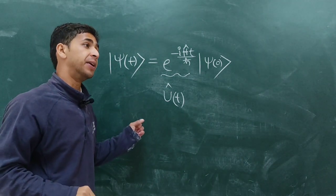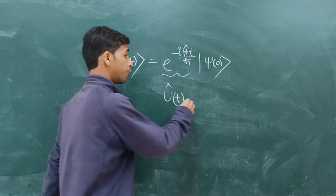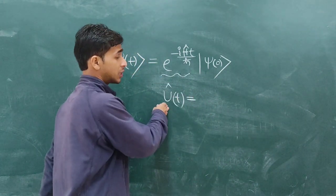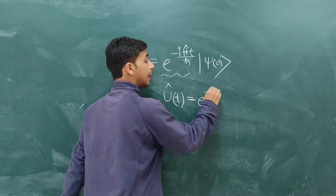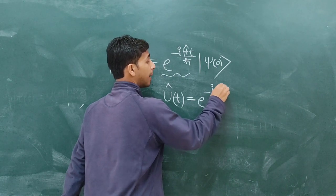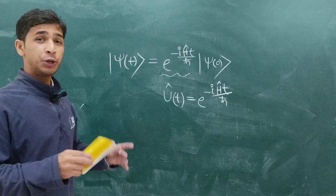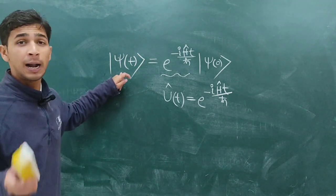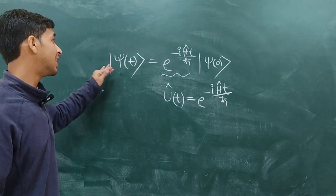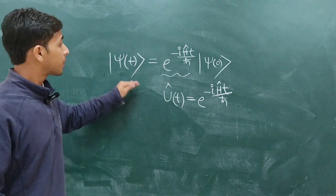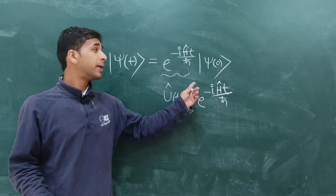And as a whole, this exponential term can be written as a symbol U(t) called the time evolution operator. So in exams you can be asked for the derivation of this time evolution operator given as exponential negative iĤt divided by ℏ, or you may be asked to derive the time development of the quantum mechanical system state.